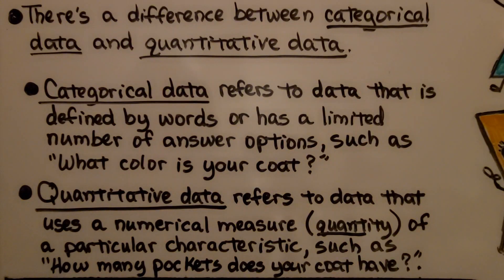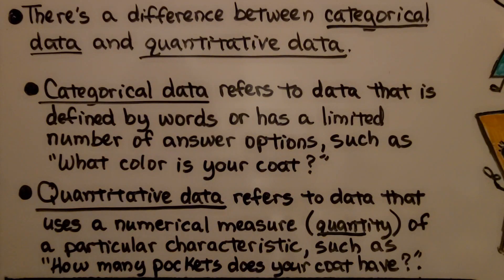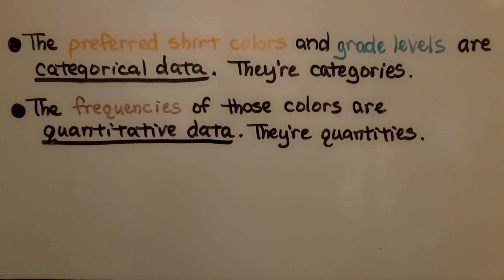There's a difference between categorical data and quantitative data. Categorical data refers to data defined by words or with a limited number of answer options, such as 'What color is your coat?' or, in our example, 'What color t-shirt do you prefer?' Quantitative data refers to data that uses a numerical measure — a quantity — of a particular characteristic, such as how many pockets a coat has, or how many students preferred a blue t-shirt. In our example, the preferred shirt colors and grade levels are categorical data, and the frequencies of those colors are quantitative data.